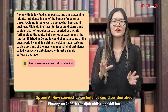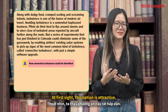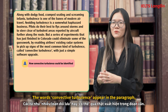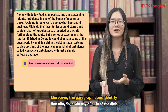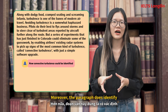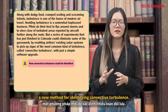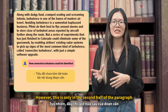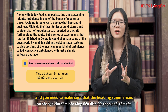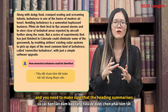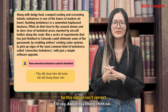Option A: How convective turbulence could be identified. At first sight, this option is attractive. The words convective turbulence appear in the paragraph, as does the word could. Moreover, the paragraph does identify a new method for identifying convective turbulence. However, this is only in the second half of the paragraph, and you need to make sure that the heading summarizes the whole paragraph. So this option is not correct.